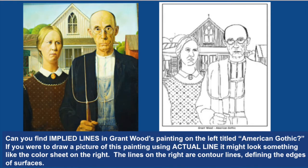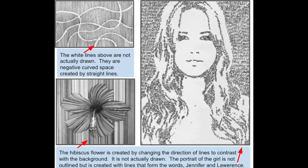This is a famous painting by Grant Wood called American Gothic. Can you find implied lines in Grant Wood's painting? If you were to draw this painting using actual line, it might look something like the color sheet on the right. The lines on the right are contour lines defining the edges of the forms that are actually in Grant Wood's painting on the left.